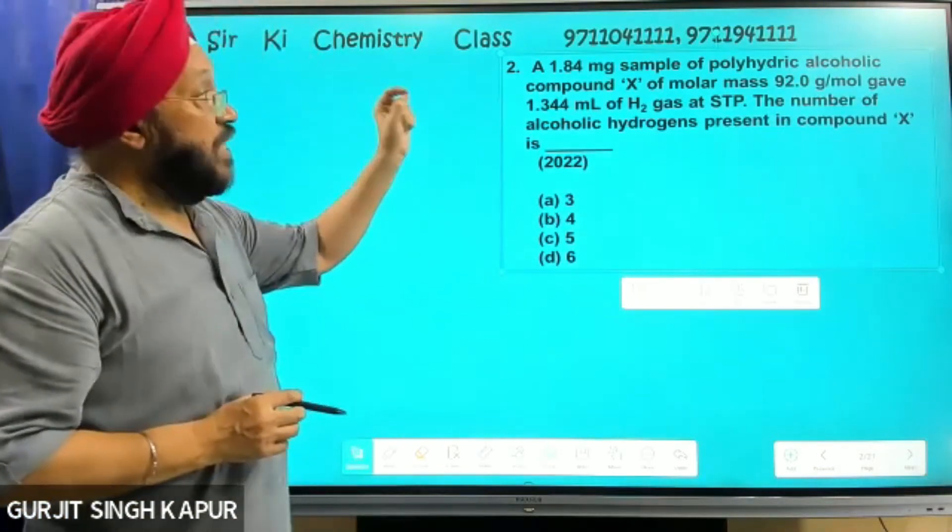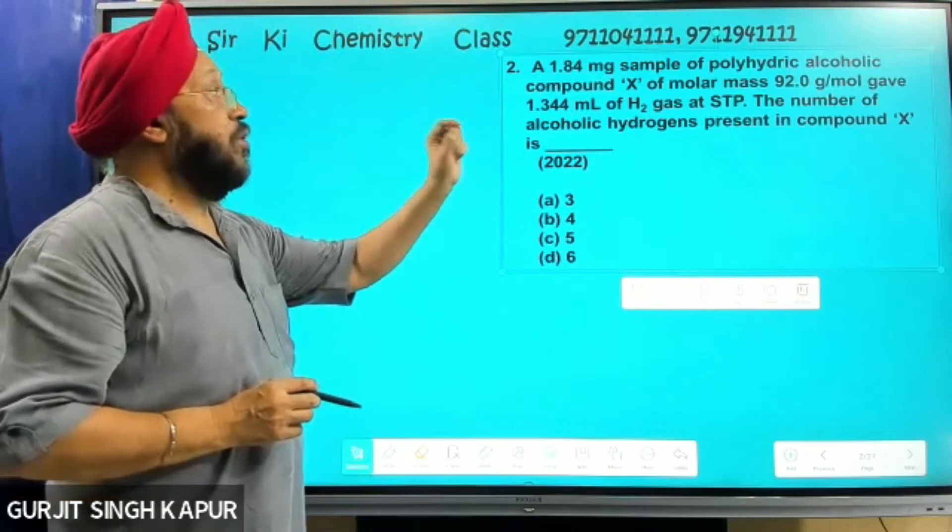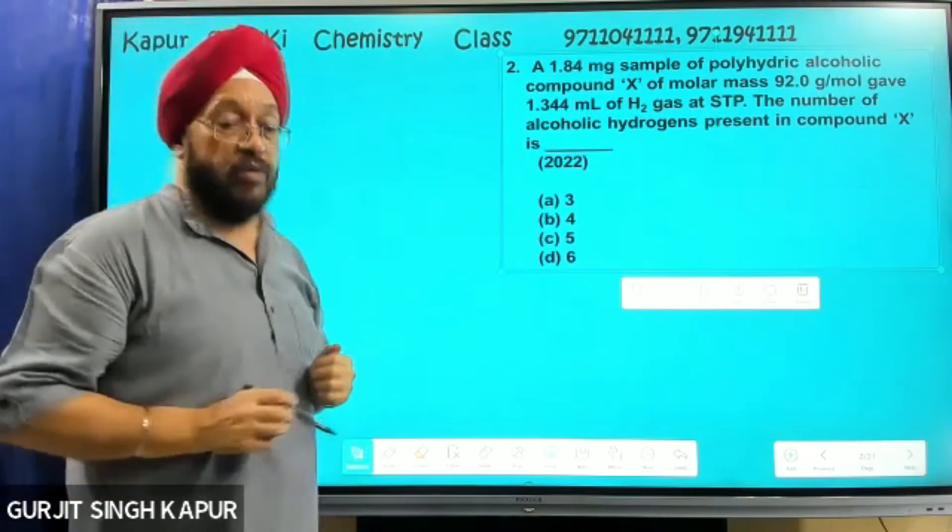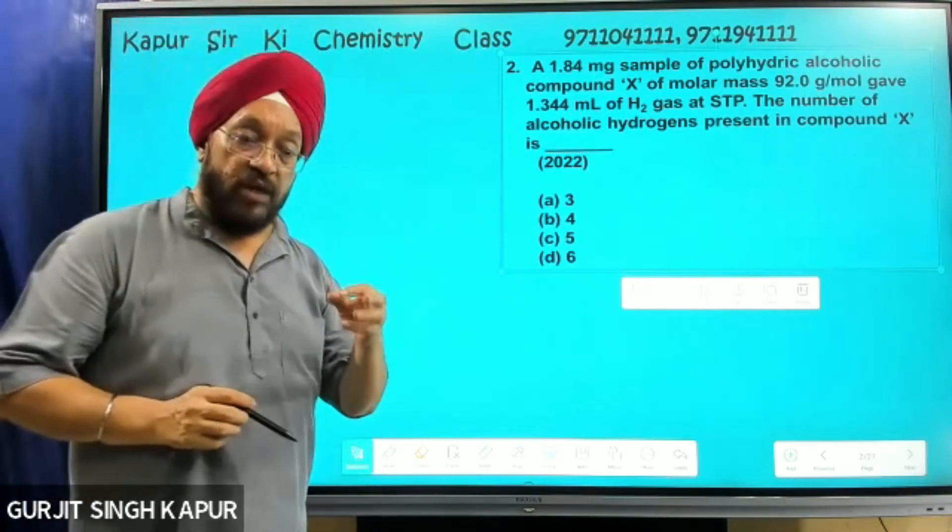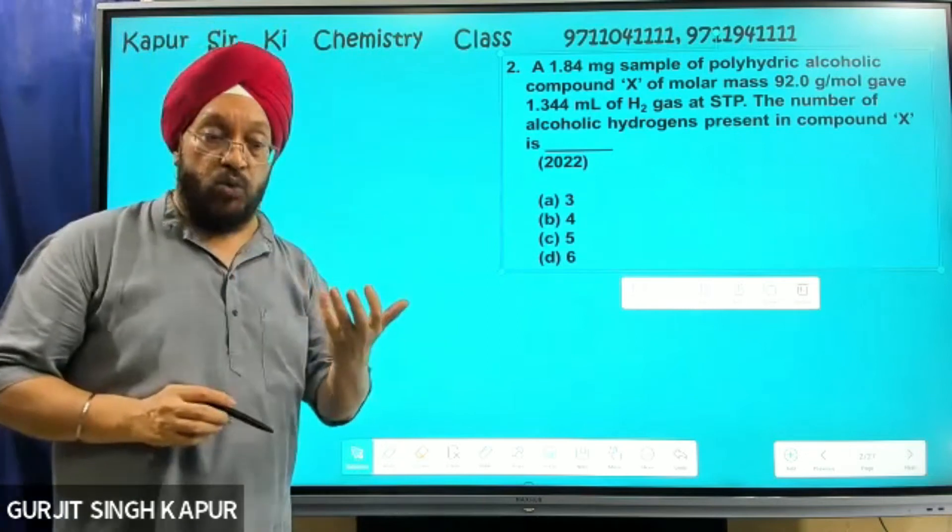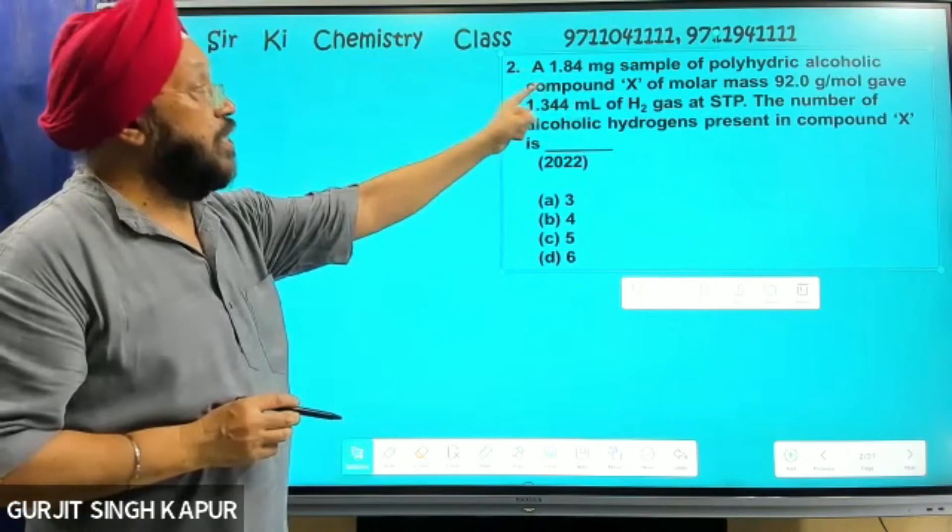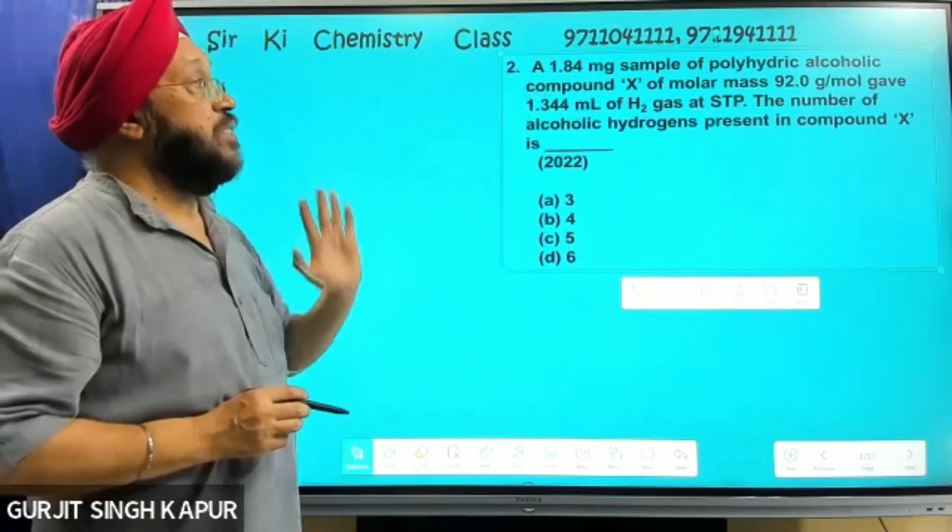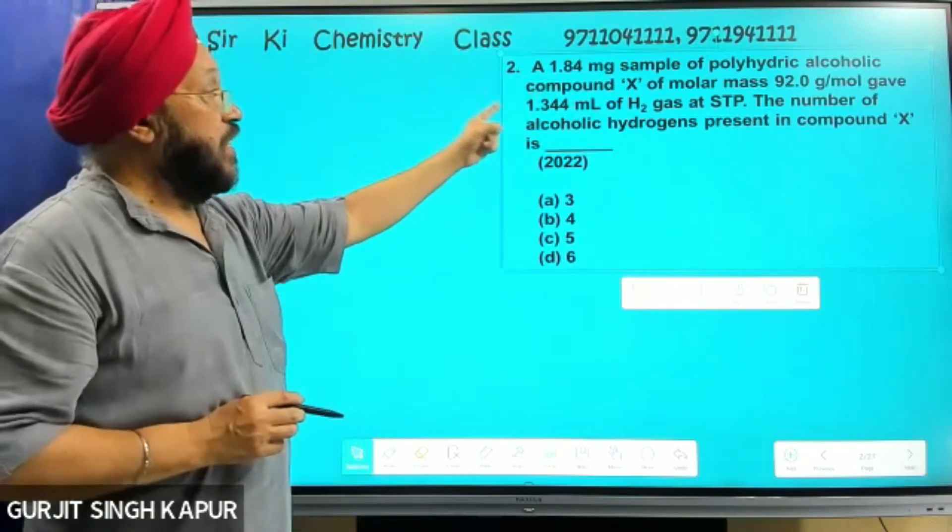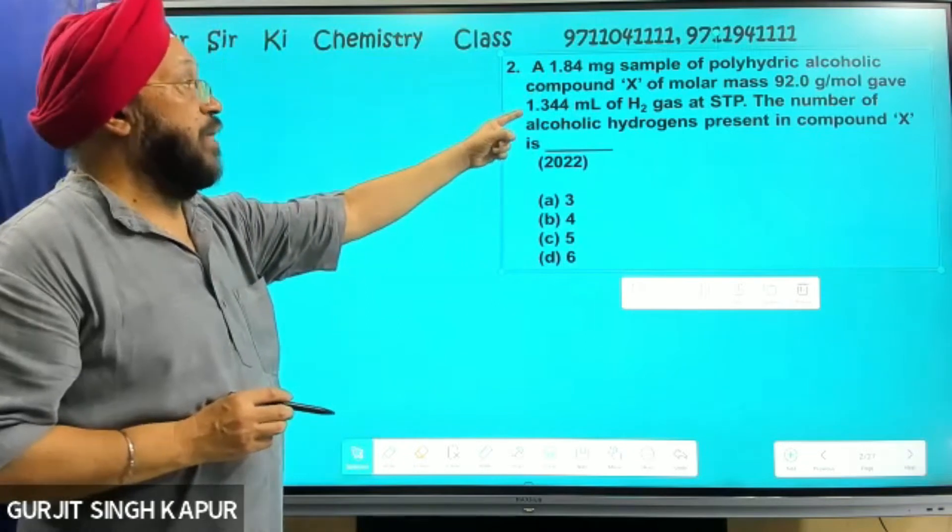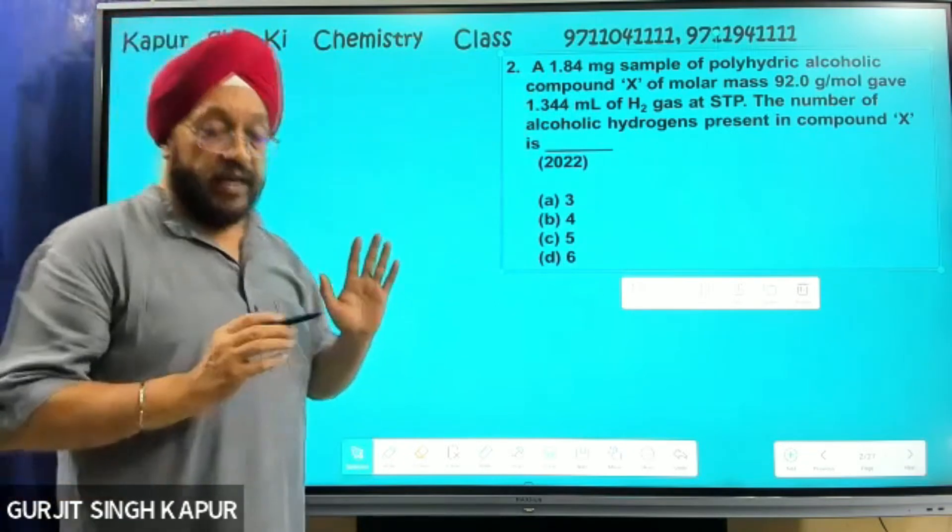1.84 mg sample of polyhydric alcoholic compound - polyhydric, the one which is having more than one OH group per molecule. So polyhydric alcoholic compound X of molar mass 92 that gave 1.34 ml of hydrogen gas under STP condition.